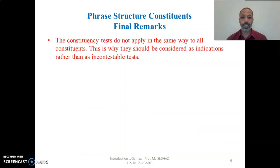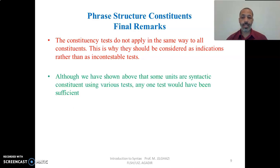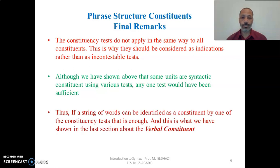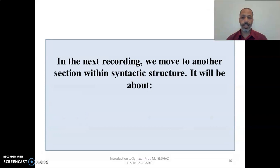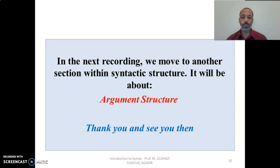Some final remarks: the constituency tests do not apply in the same way to all constituents, which is why they should be considered as indications rather than incontestable proofs. Although we have shown above that some units are syntactic constituents using various tests, any one test would have been sufficient — just one, if it can apply, is sufficient to prove that something is a constituent or not. Thus, if a string of words can be identified as a constituent by one of the constituency tests, that is enough. Thank you very much, and see you in the next lecture about argument structure.